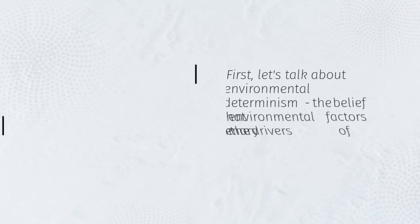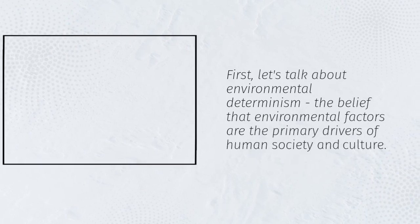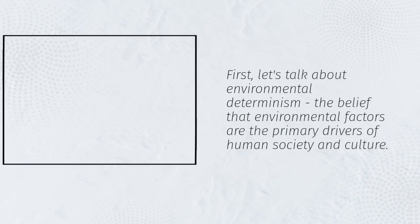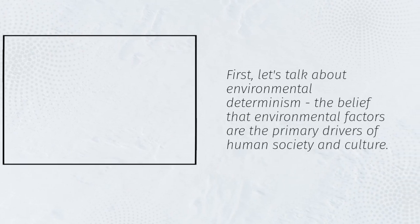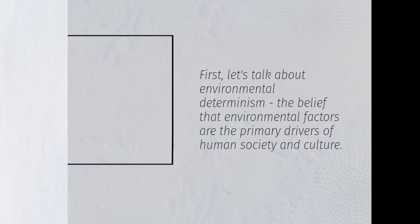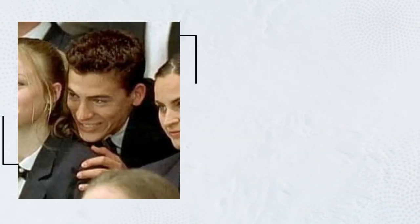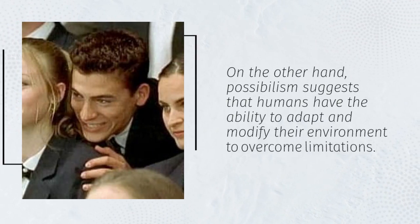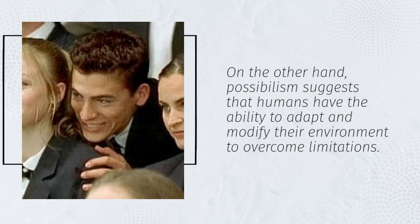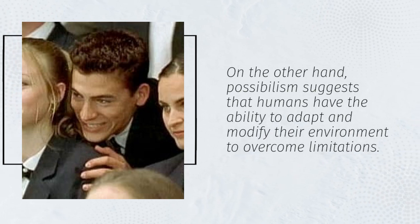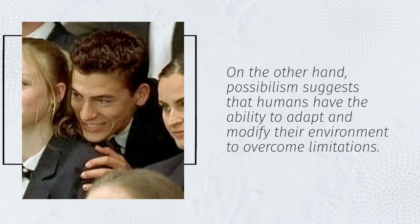First, let's talk about environmental determinism — the belief that environmental factors are the primary drivers of human society and culture. On the other hand, possibilism suggests that humans have the ability to adapt and modify their environment to overcome limitations.